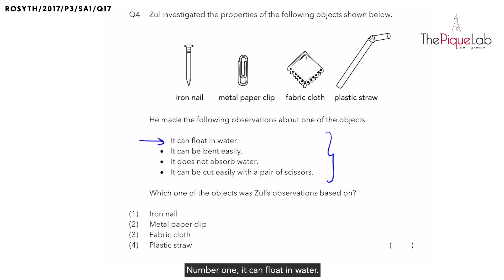Number one, it can float in water. Can an iron nail float in water? To find that out, we will need to look at the material it is made of. Iron is a type of metal, and metal is a material that sinks in water, not float. And therefore, we know that iron nail is not the object we are looking for. So let's cross it out.